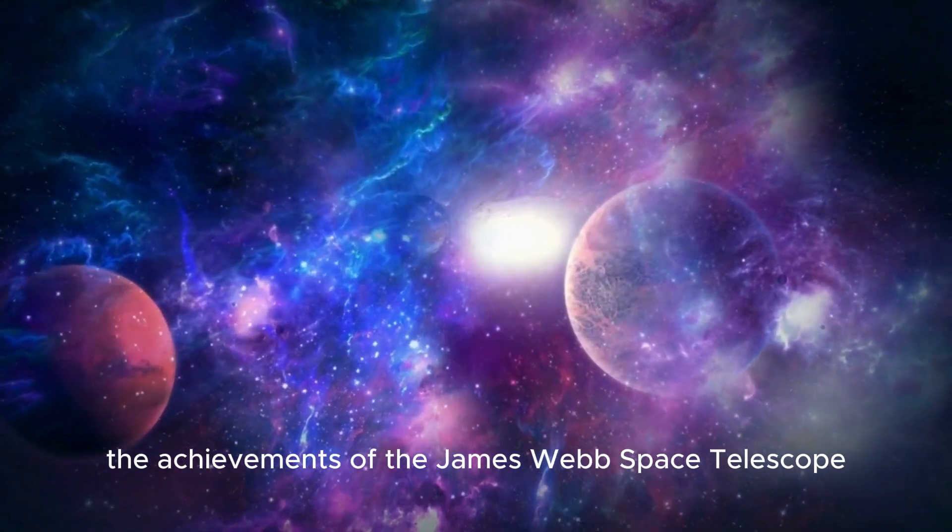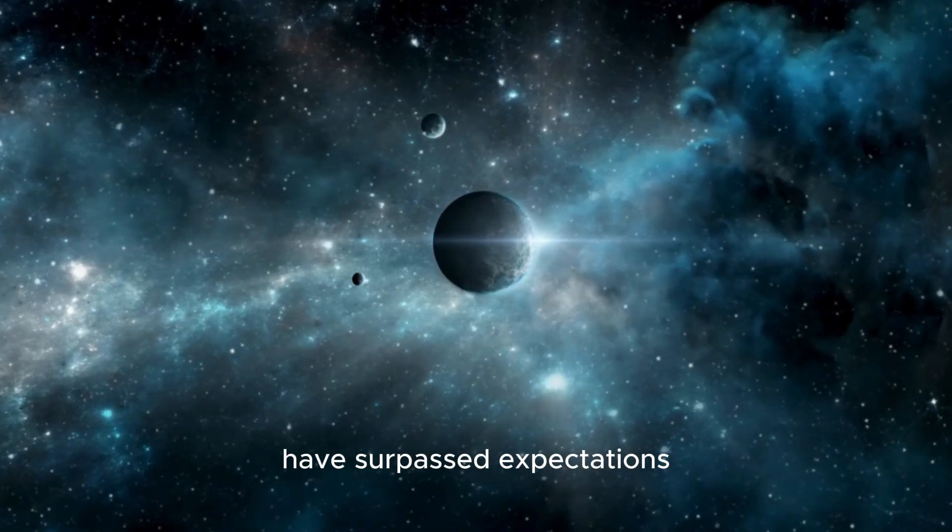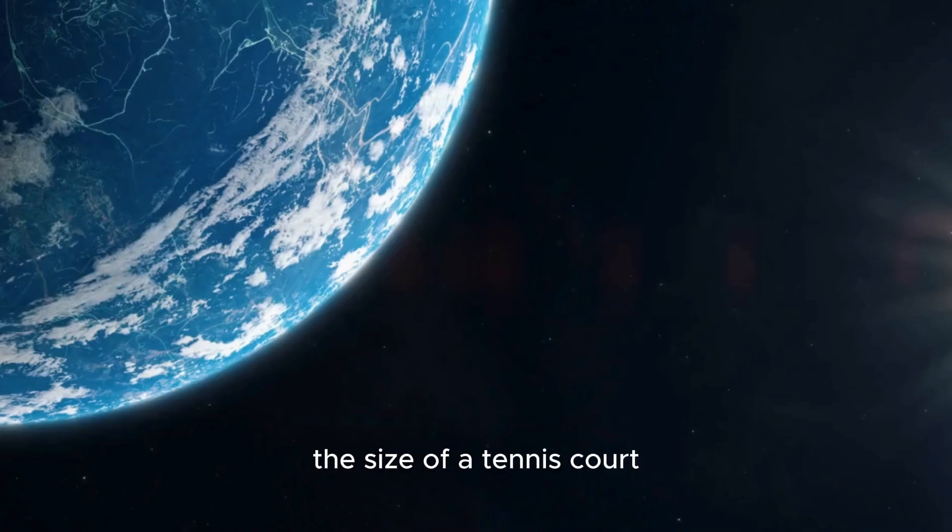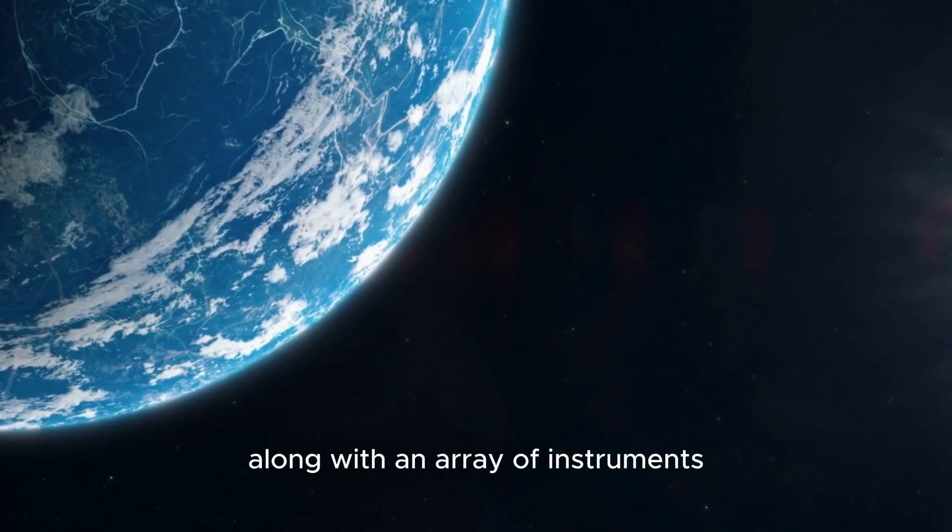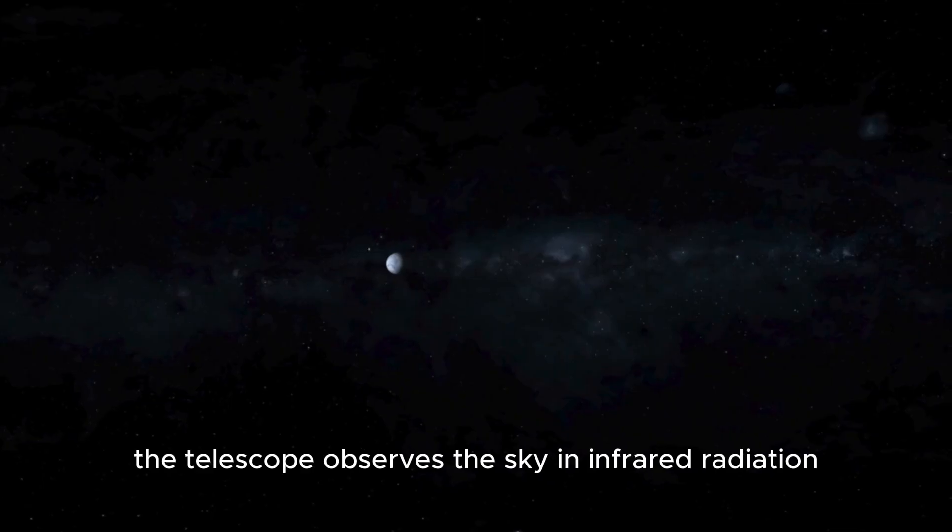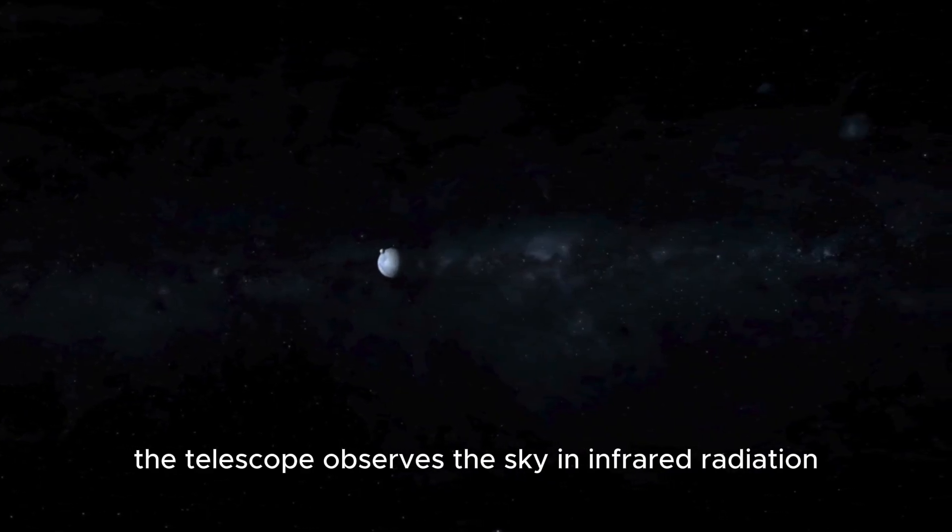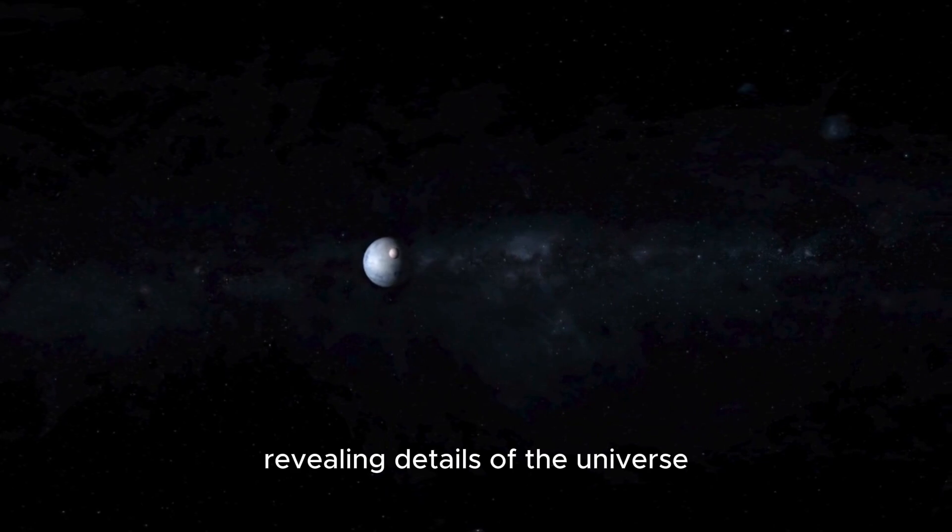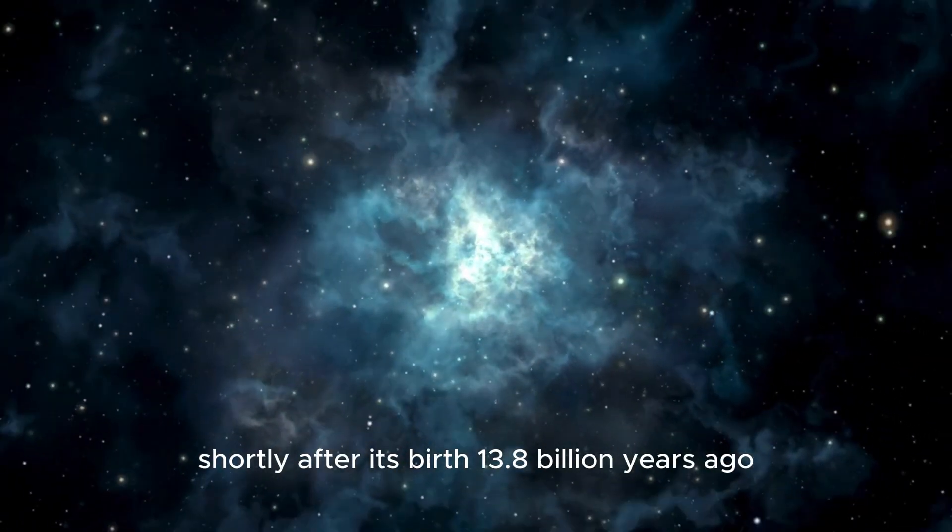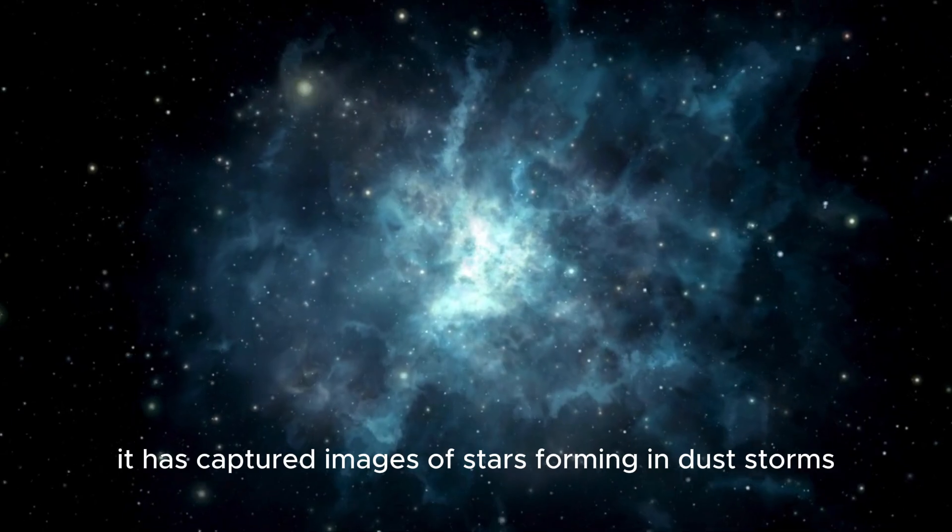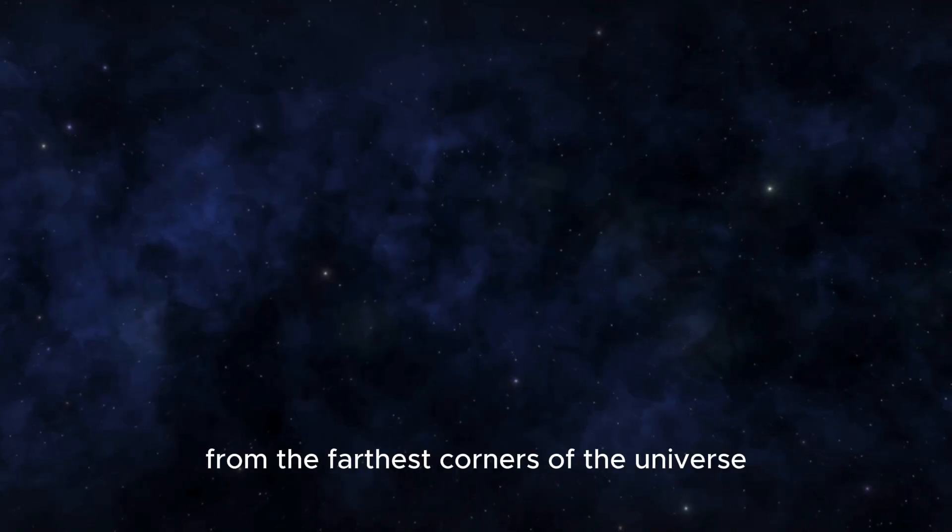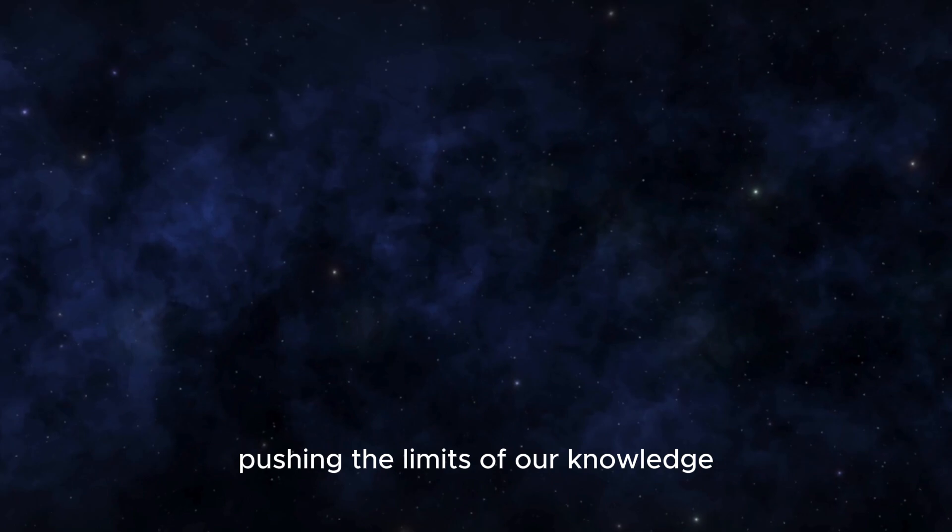The achievements of the James Webb Space Telescope have surpassed expectations, featuring a 6.5-meter mirror and a sunshield the size of a tennis court, along with an array of instruments cooled to near absolute zero. The telescope observes the sky in infrared radiation, revealing details of the universe shortly after its birth 13.8 billion years ago. It has captured images of stars forming in dust storms and gathered faint light from the farthest corners of the universe, pushing the limits of our knowledge.